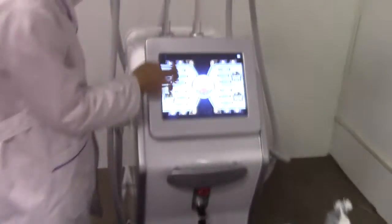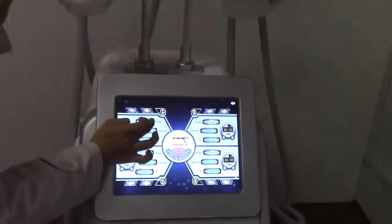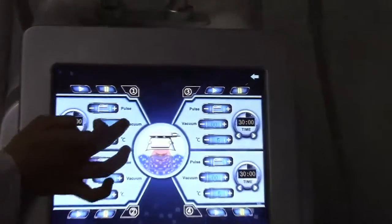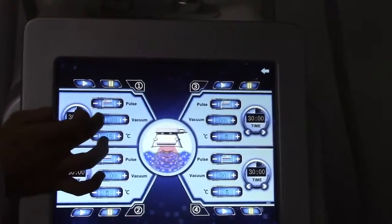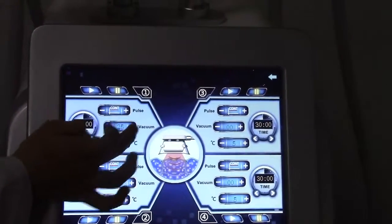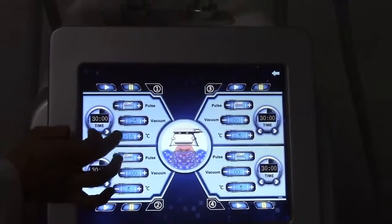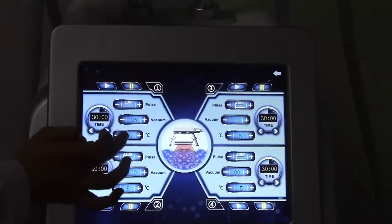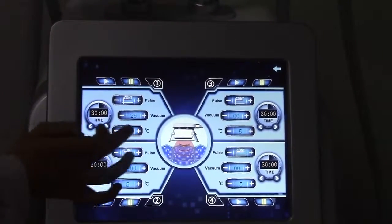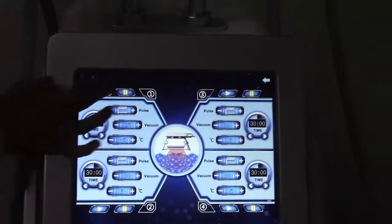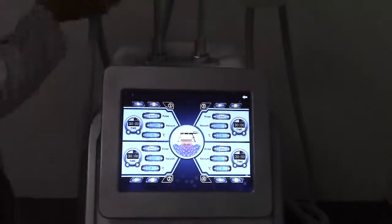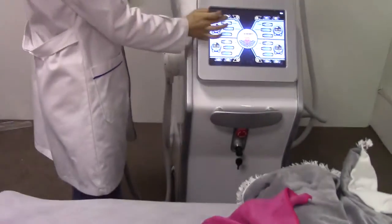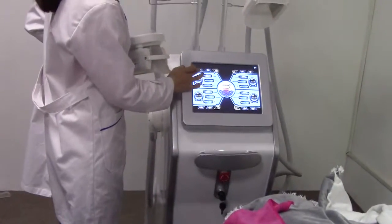Now we use the medium handle piece. We use the continuous mode and start from low vacuum 25. Usually for the first treatment, we start from minus 10 degrees. Now we start the treatment.